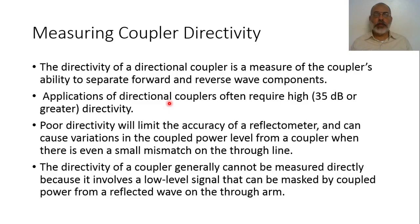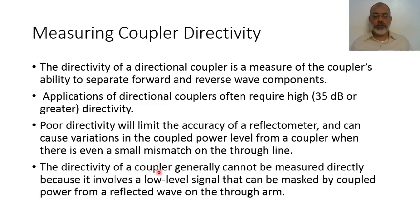Applications of directional couplers often require high directivity — more than 35 dB. Poor directivity will limit the accuracy of using the directional coupler as a reflectometer and can cause variation in coupled power level when there is even a small mismatch on the through line. The directivity generally cannot be measured directly because it involves very low signal levels that can be masked by coupled power from reflected power.